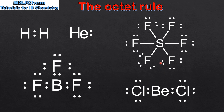Finally, there are some atoms in period 3 onwards that can expand their octets — for example sulfur, which is stable with 12 electrons in its outer energy level.